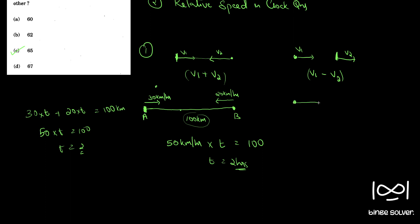Now we will see the same-direction case. A car from point A moves in this direction at 30 kilometers per hour, and from B a car goes at 10 kilometers per hour in the same direction, with 100 kilometers between them. Since A is moving faster, A will eventually catch up with B. If asked at what time A catches up with B, we use relative speed: we assume B is stationary, and A is moving towards B with a relative speed.